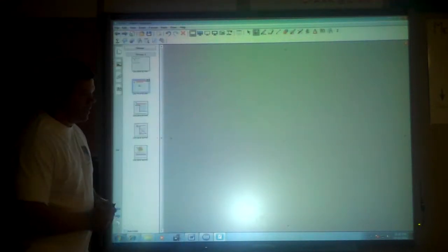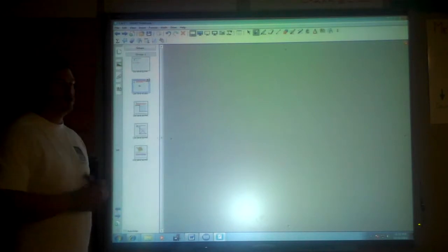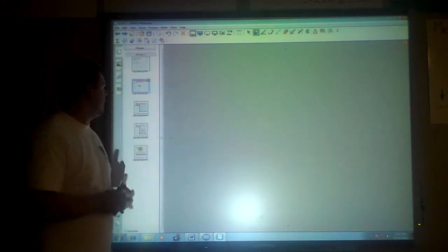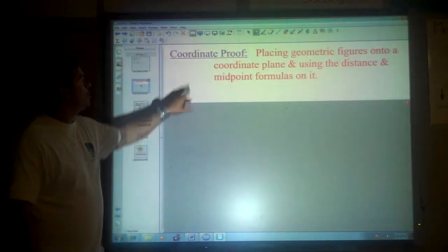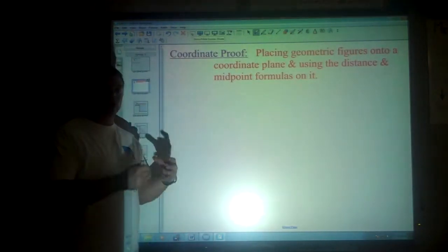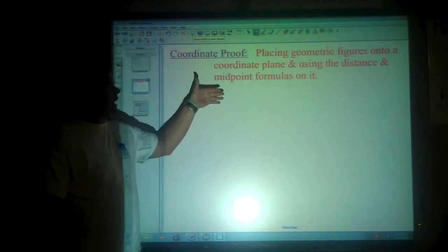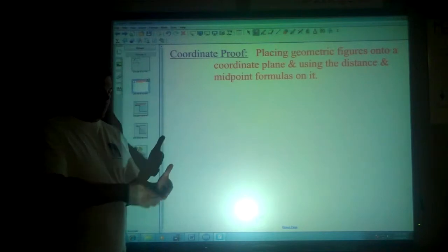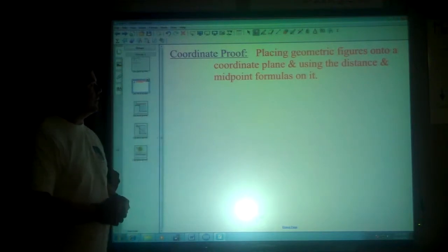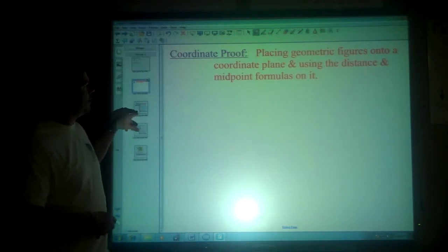Geometry lesson 4-7. We're going to be using the concept of using coordinates to prove some triangles are congruent or different pieces of them. So we have what we call coordinate proof, placing the actual geometric figure on a coordinate plane and using any distance and midpoint formulas on it to determine if we have any congruent sides or if we have any angles that might be of interest.